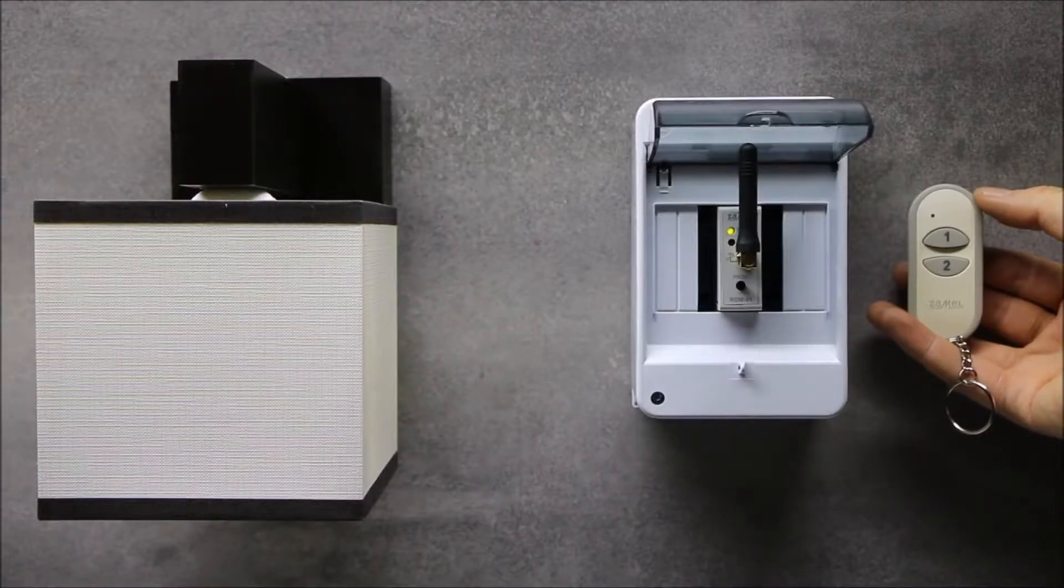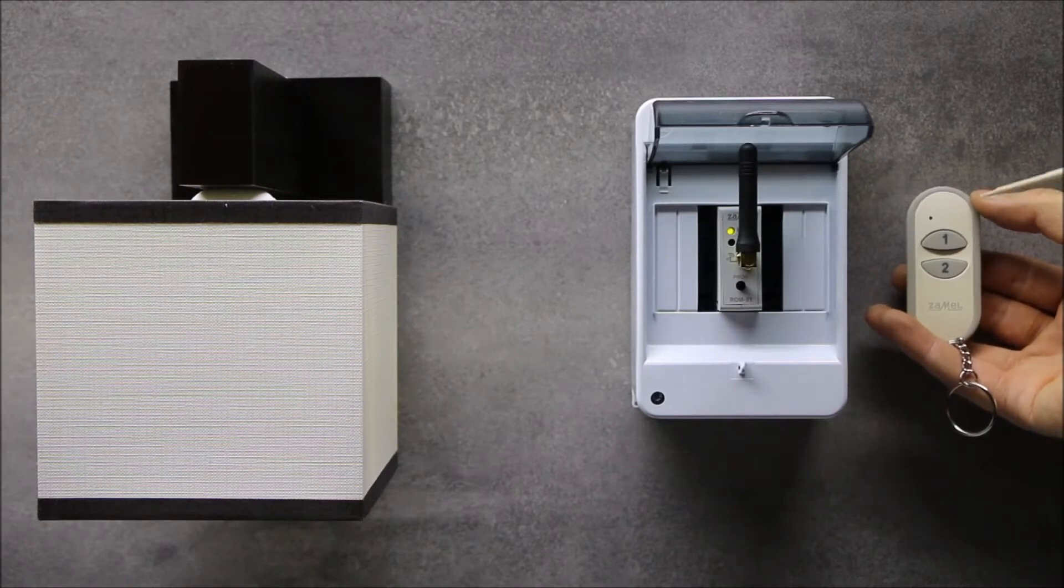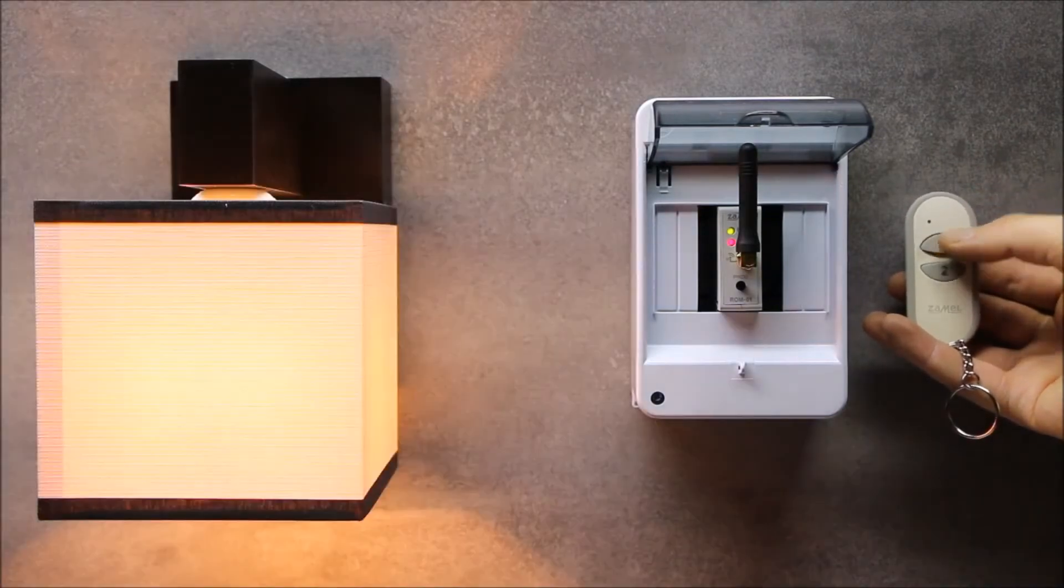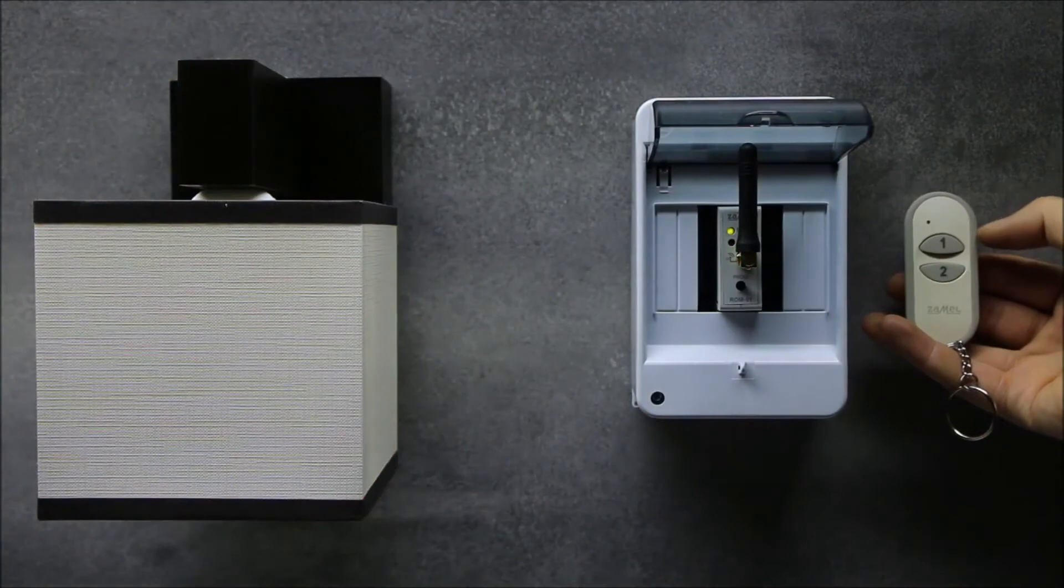In bi-stable mode, one transmitter's button only is used for control. By pressing this button, the status of the selected output changes periodically. As a result, the device connected to the ROM01 switches on and off.